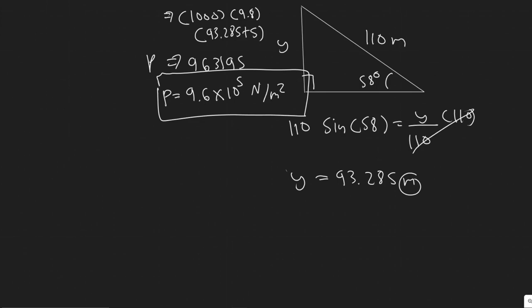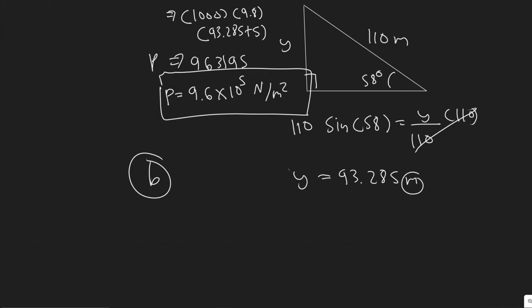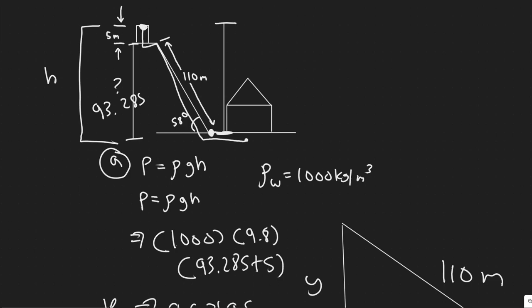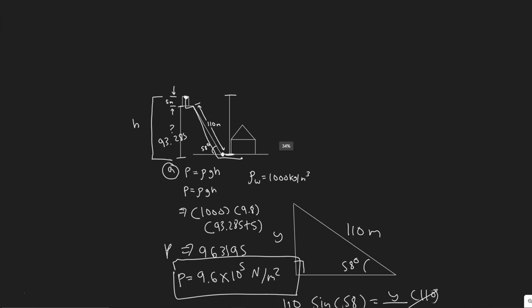Next, what we're going to want to do is B. So for B, what they want us to find is how high could the water shoot if it came out vertically out of a broken pipe in front of the house. So you can imagine it's going to come out here. So let's say this is where the broken pipe is out of the house, and we're trying to figure out how high it's going to go.